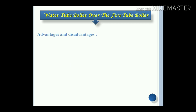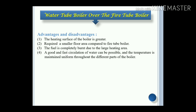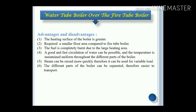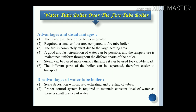Some of the advantages of water tube boilers over fire tube boilers: the heating surface of the boiler is greater, requiring a smaller floor area compared to a fire tube boiler. The fuel is completely burned due to the large heating area. Good and fast circulation of water is possible and the temperature is maintained uniform throughout the different parts of the boiler. Steam can be raised more quickly, therefore it can be used for variable loads. The different parts of the boiler can be separated, making it easier to transport. Disadvantages: scale deposition can cause overheating and bursting of the tubes. A proper control system is required to maintain a constant water level as there is a small reserve of water.